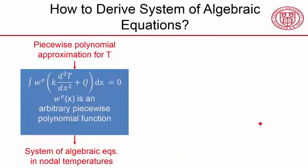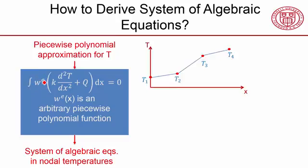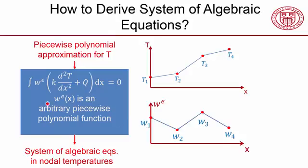Okay, so which means that to summarize then, we have the weighted integral form, the weak form as it's called, but with a particular shape of W. So our temperature over here is this shape, our weighted integral, our weight is of this shape, and you can see it's the same kind of shape.